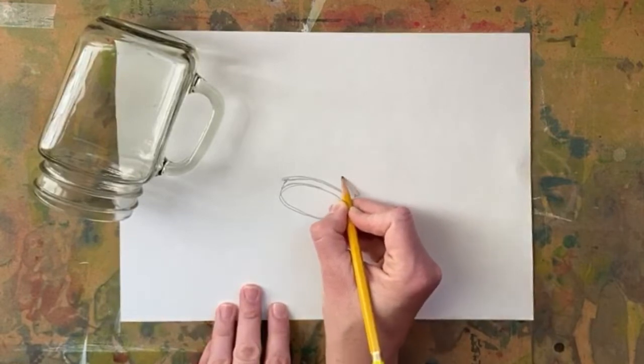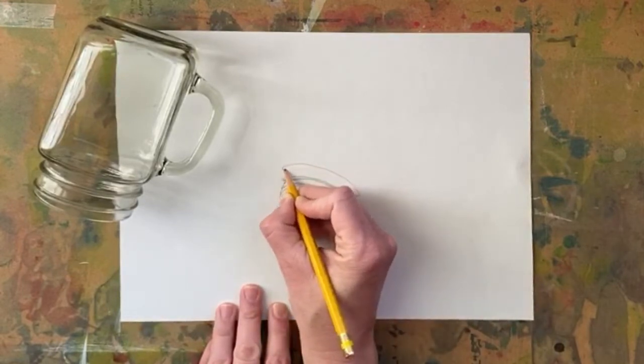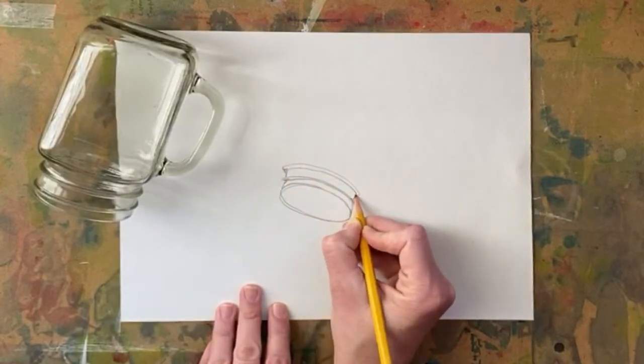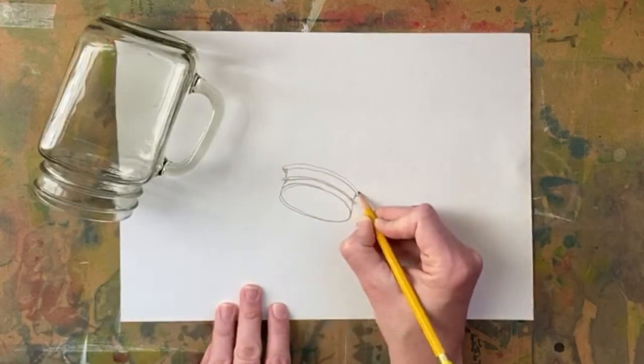The value of doing something like this is that it's an exercise in observation and perception. Your continuous line contour drawing will not be a perfect rendering of your object.